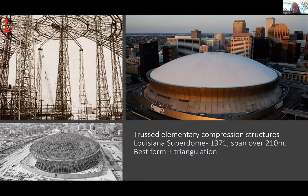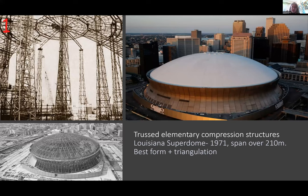Now still talking about elementary compression structures, but the elements are thrust elements — trusses or 3D trusses rather than solid steel or timber elements. I am bringing the first and third solutions together: positive form plus triangulation. It becomes doubly strong, and here you can go over 200 meters easily — this is the Louisiana Superdome. Form with positive curvature plus triangulation makes it even stronger.